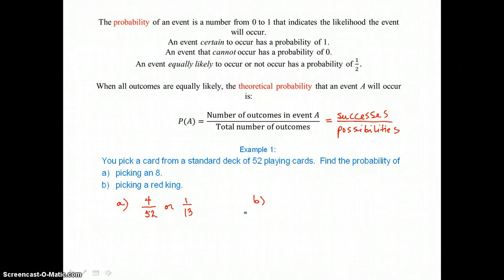In B it says find the probability of picking a red king. Well in this deck of 52 playing cards there's two red kings, a heart and a diamond. Those are our successes and again our possibilities are the 52 cards. So 2/52, or that's going to simplify to 1/26.